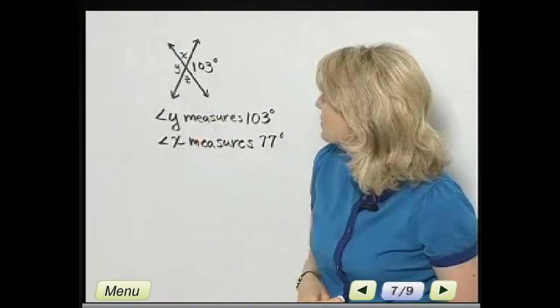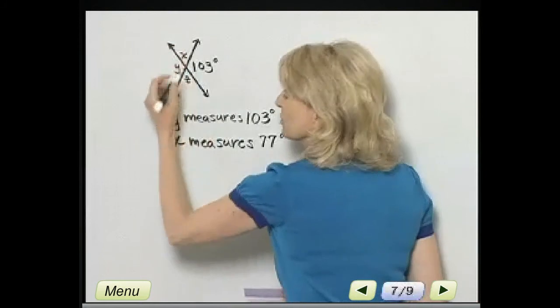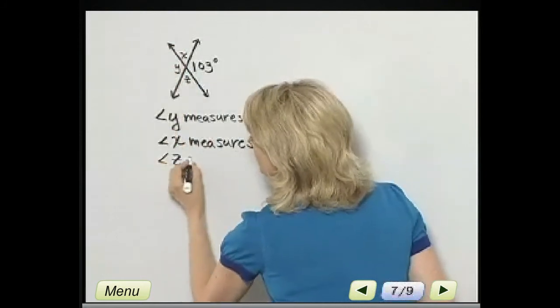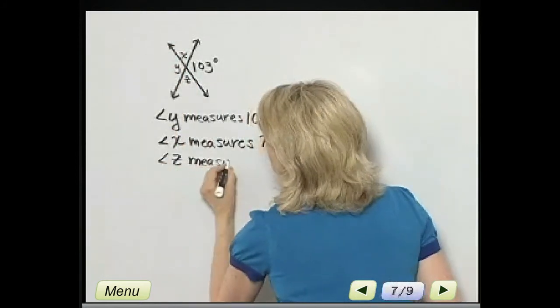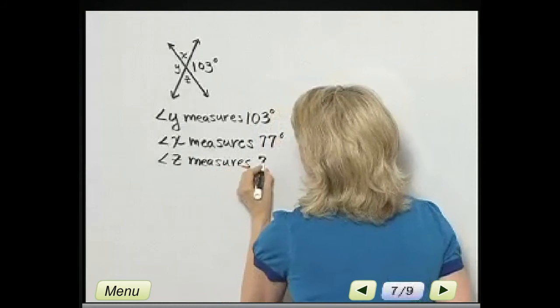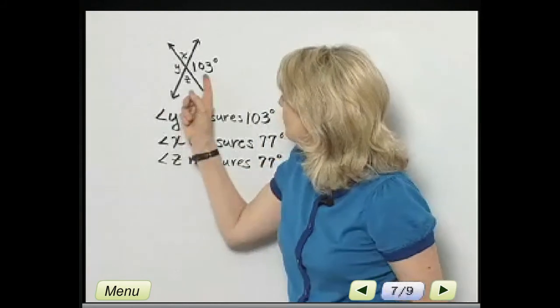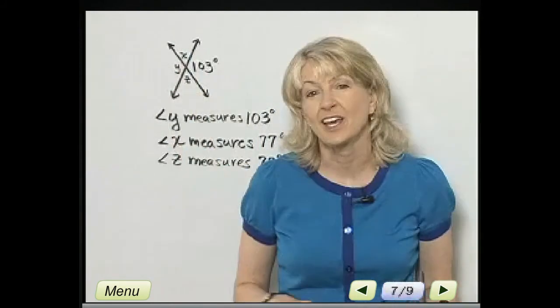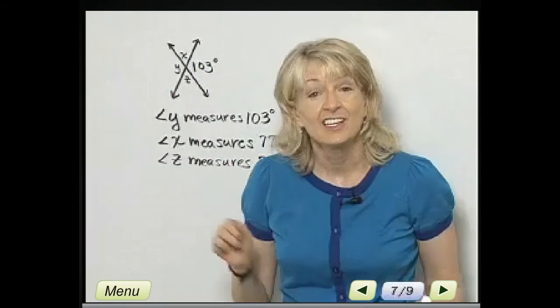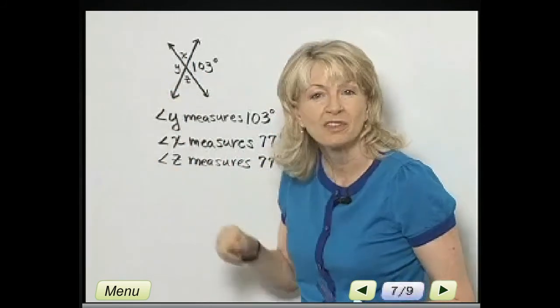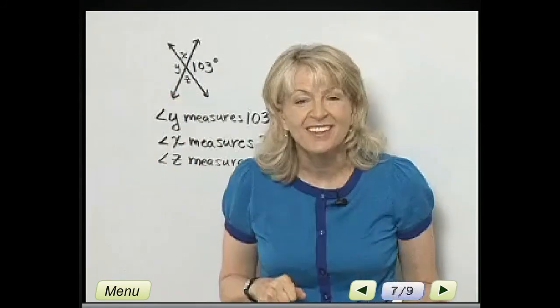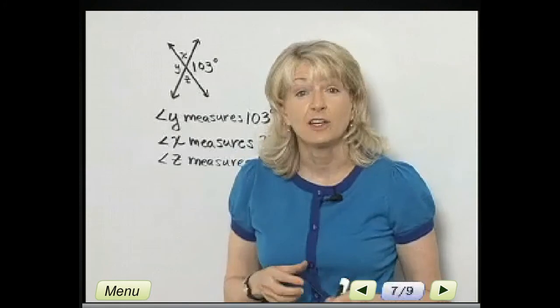Now, if X measures 77, X and Z are vertical, so angle Z measures 77 degrees also. If you find the sum of all four of these angles, what should that sum be? It actually represents a full revolution, so that sum should be 360 degrees, and it will be.